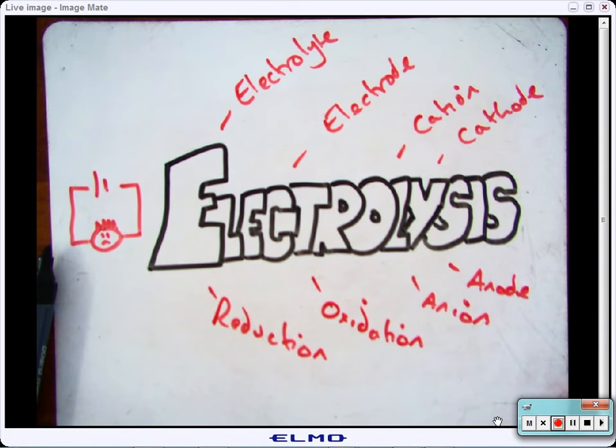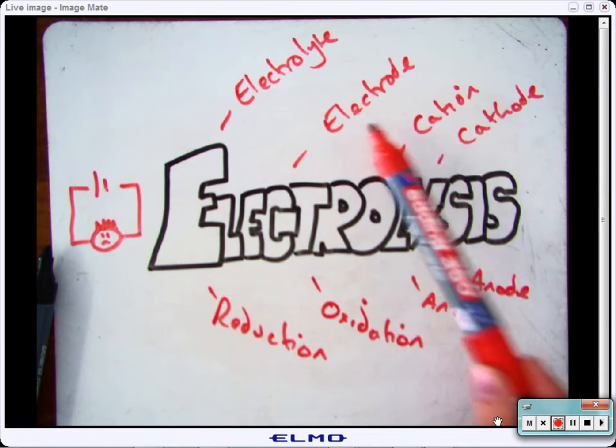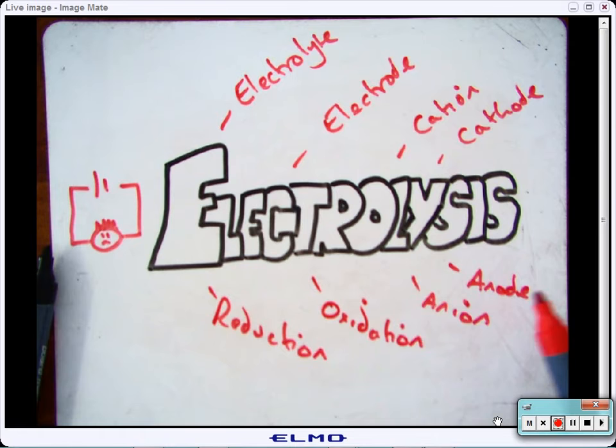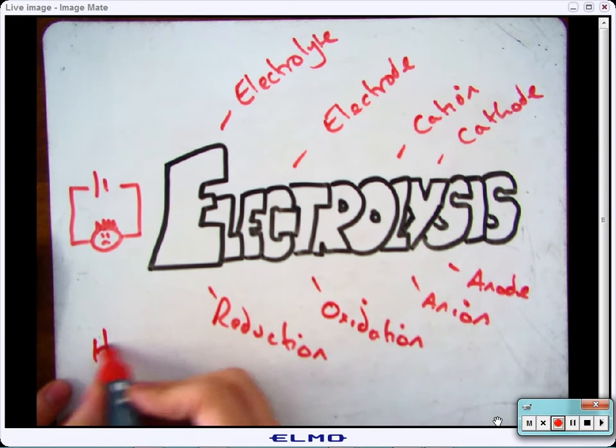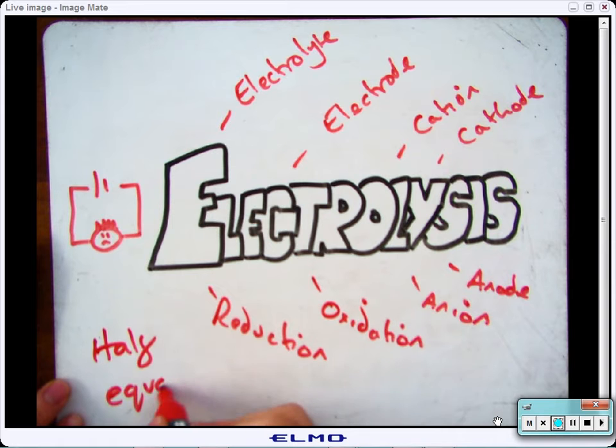This video is going to have a look at electrolysis. Some of the key words and things you need to be able to use by the end of this lesson are electrolyte, electrode, cation, cathode, anode, anion, oxidation, reduction, and half equation.